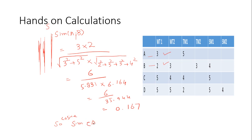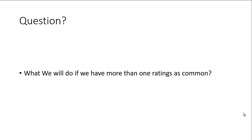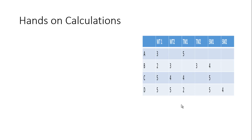So cosine similarity of A and B equals to 0.167. Till now we have seen the example which have only one rating as common. The question arises how we will deal with the problem if we have more than one rating as common. Let's take another example. If we look into the utility matrix, here A and C have more than one rating as common, that is 3, 5 and 5, 4.